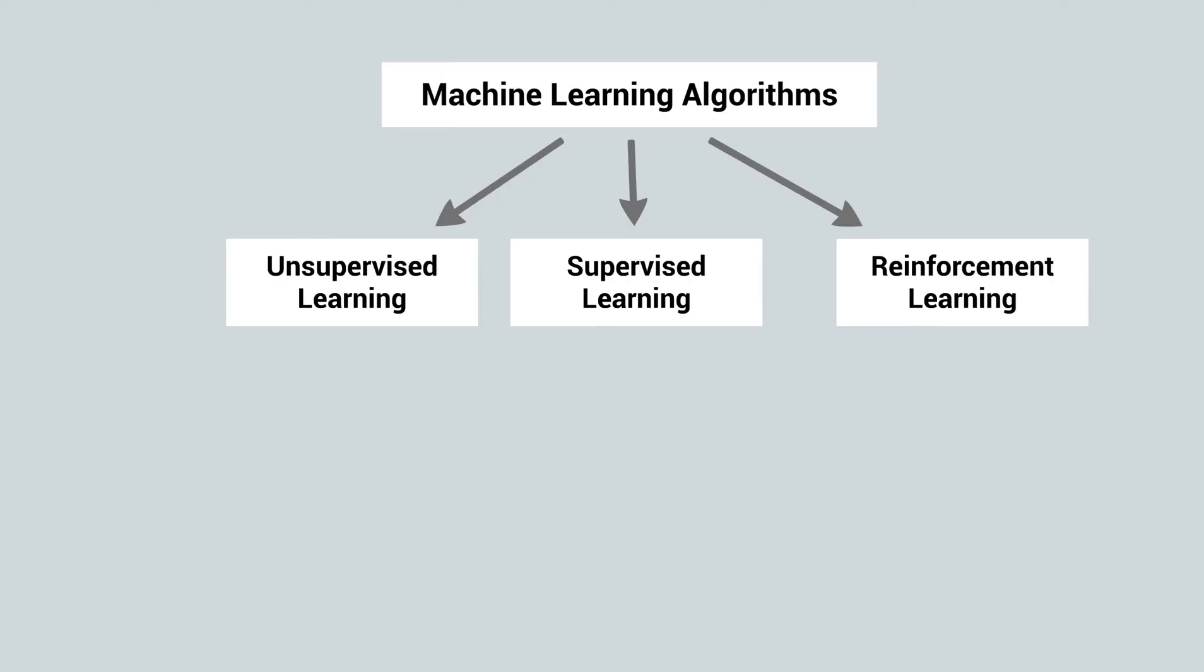Reinforcement learning is another type of machine learning where the agents learn to take actions based on its interaction with the environment with the aim to maximize rewards. It is most similar to the learning process of humans following a trial and error approach.